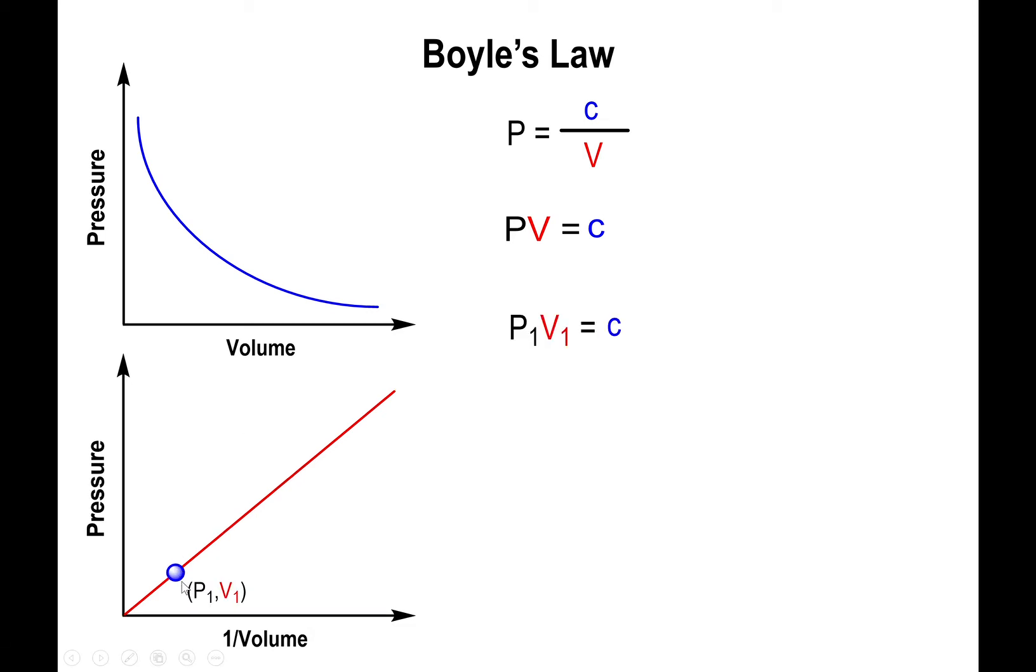No matter what the pressure-volume data set is, as long as they correspond to each other, the slope is going to be the same. If we pick a data point anywhere on the line with specific pressure P1 and specific volume V1, that multiplication will equal the same slope.